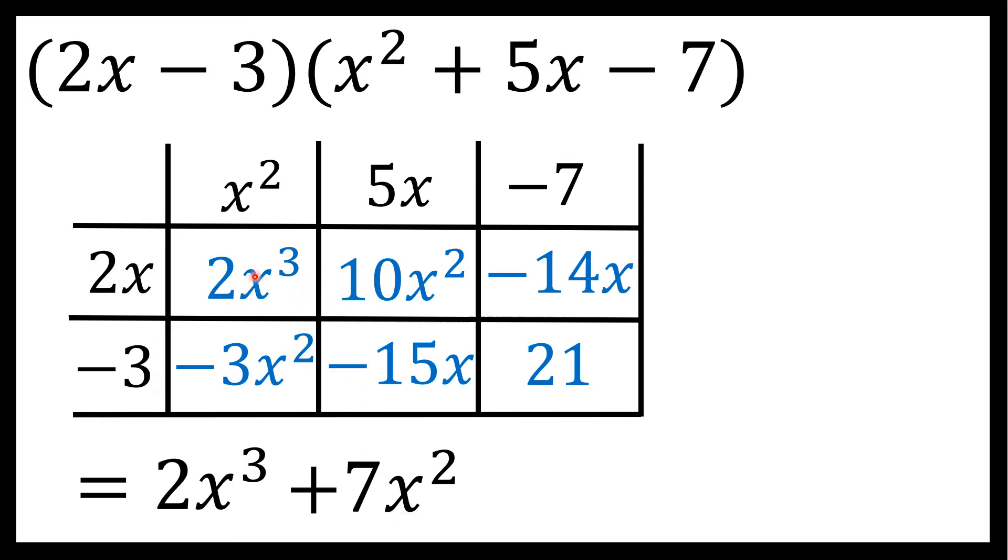Now that I've taken care of these first three boxes, I'll look at the terms that have x to the first power. And I do see, again, two like terms, two terms that involve an x to the first power, negative 14x and negative 15x. Putting those together, I get negative 15 plus negative 14 is negative 29x.